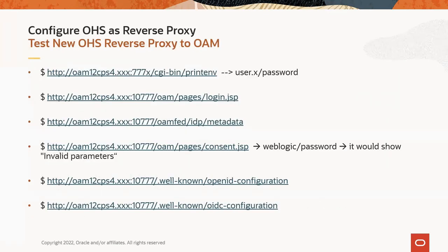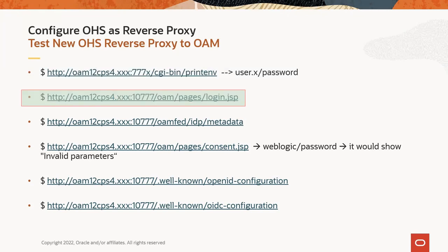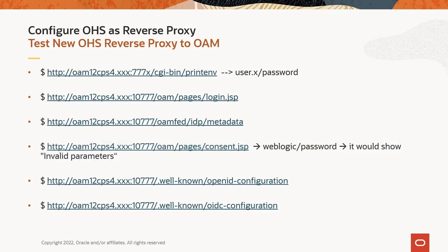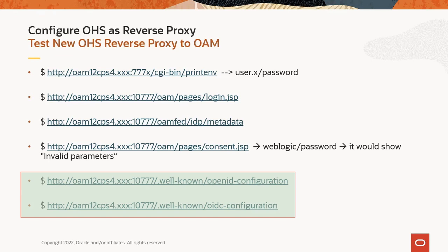This slide reviews ways to check the new OAM proxy. The first URL is a protected resource used for testing — access it and make sure it works correctly after the change. The second URL accesses the OAM login page using the web server proxy host and port. Also check the metadata URL. Access the consent.jsb URL using the new host and port of the proxy web server, log in with an appropriate user. The expected message shows invalid parameters. Check a couple more URLs from the slide and make sure they show configuration information and not an error.